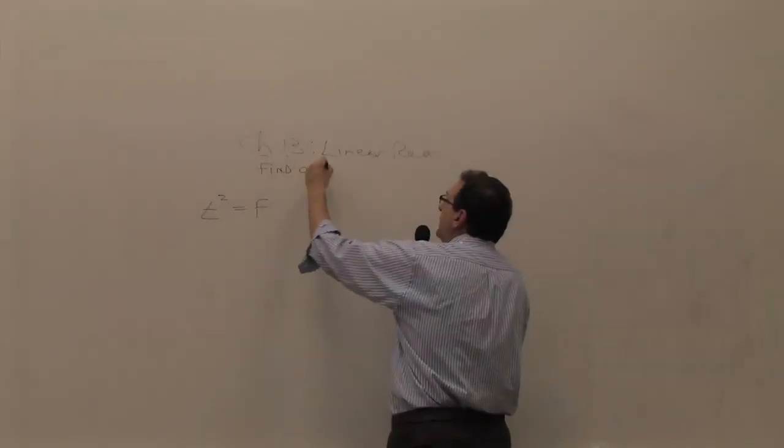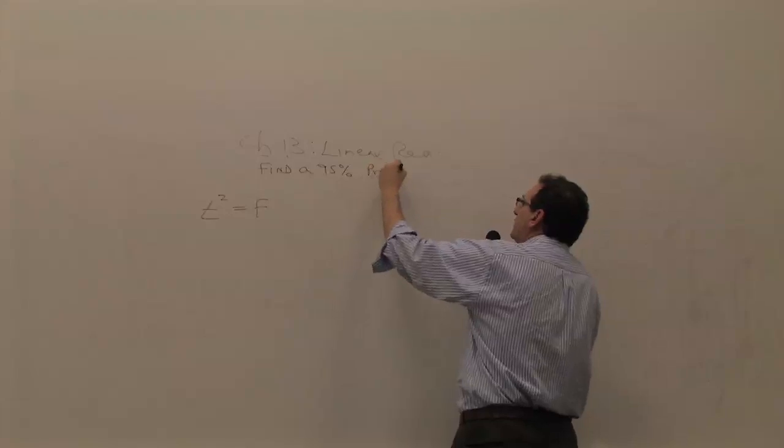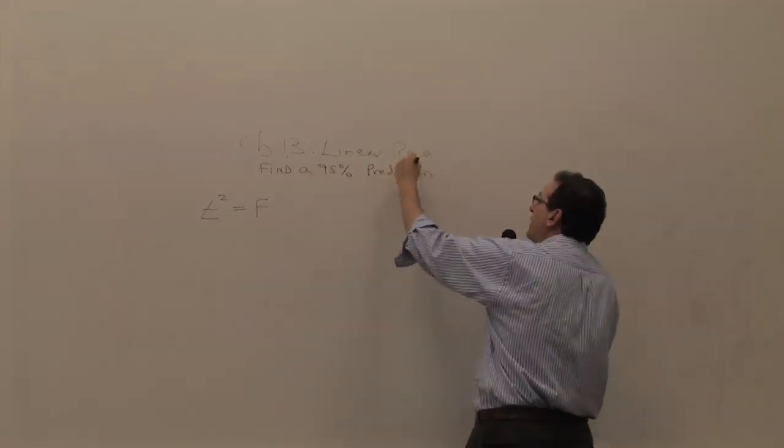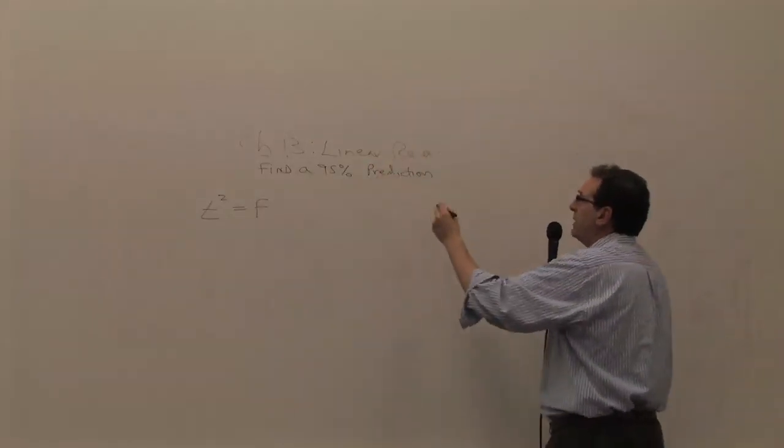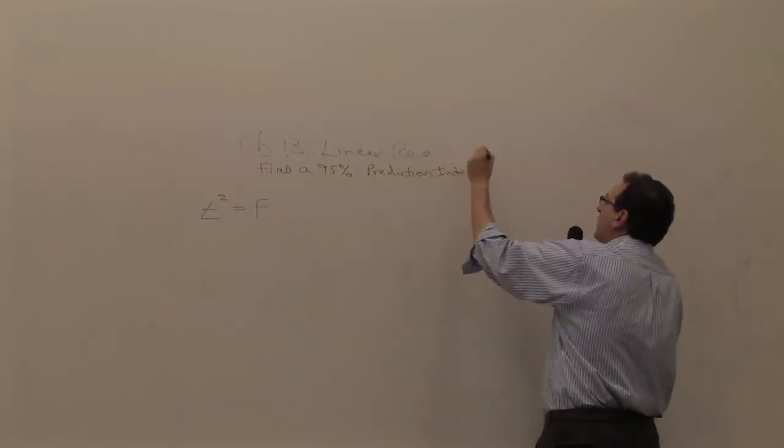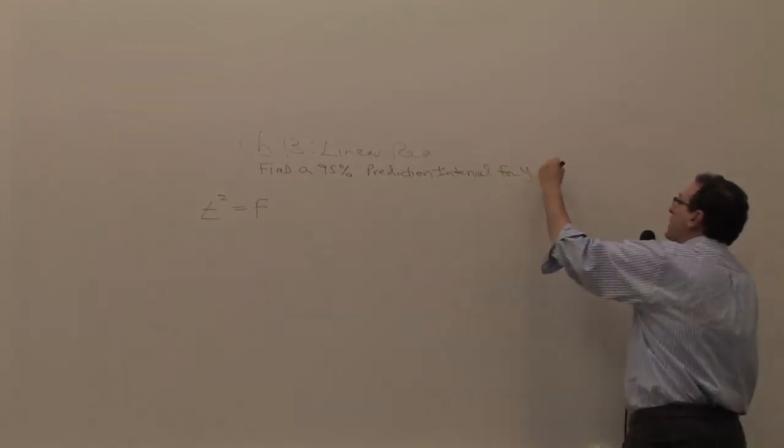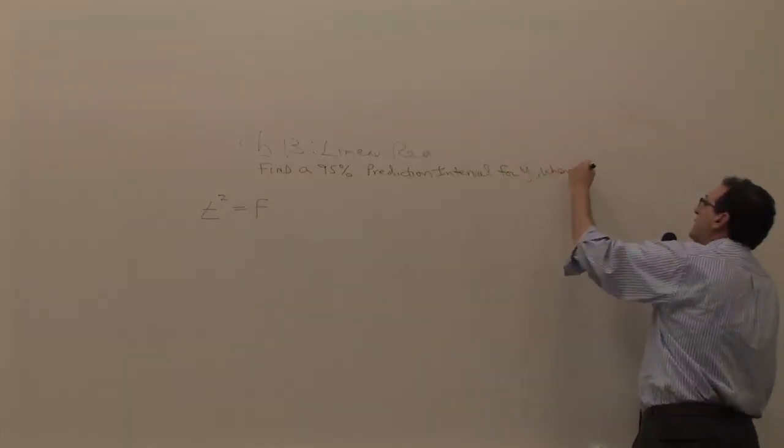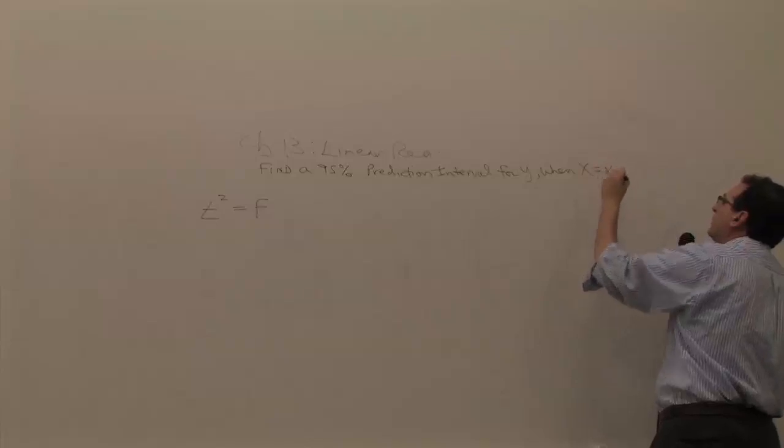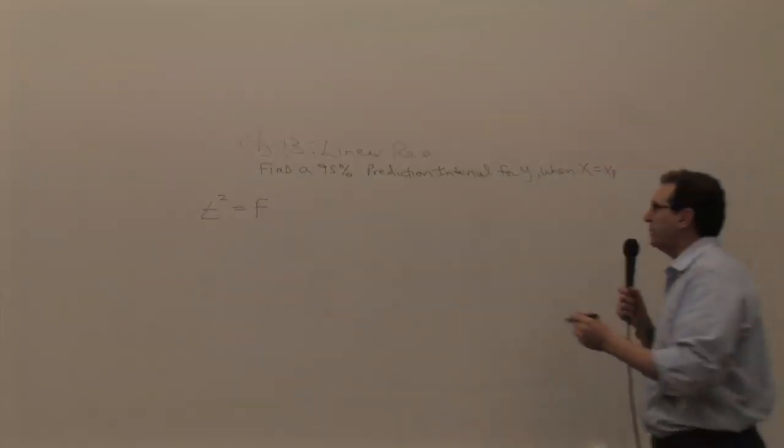Find a 95% prediction interval - that doesn't have to be 95%, I'll explain this in a couple of minutes - interval for y when x equals some number called x sub p. That sounds complicated, but let me give you a concrete example.